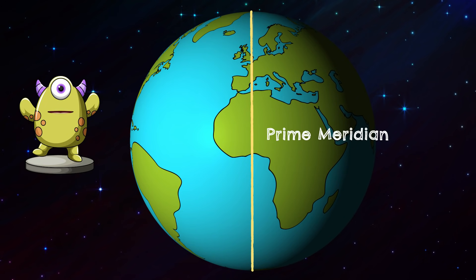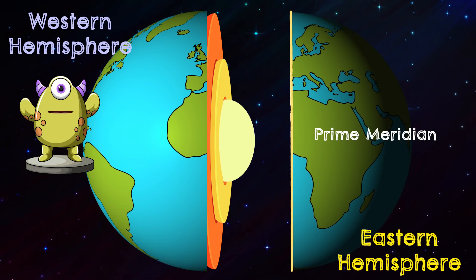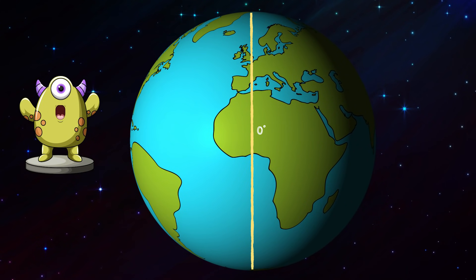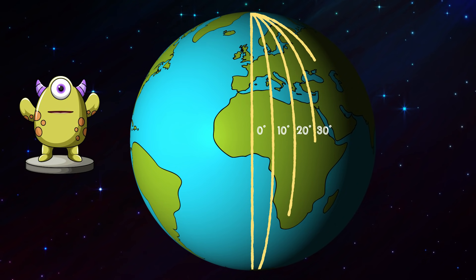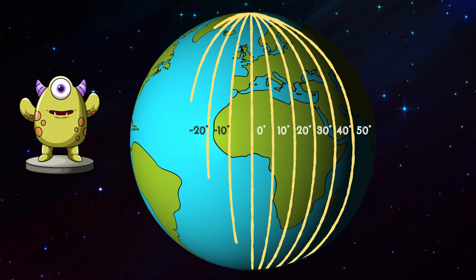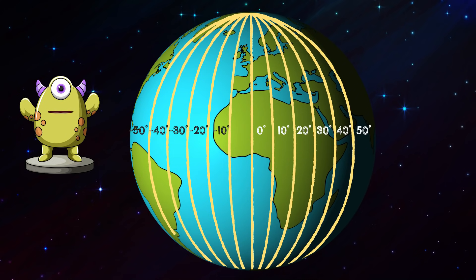The central longitude is called the prime meridian. This line divides the earth into the western hemisphere and the eastern hemisphere. Like the equator, the prime meridian is marked at zero degrees. Longitudes east of the prime meridian go up in numbers to 180 degrees east, and longitudes west of the prime meridian go down as negative numbers to negative 180 degrees.